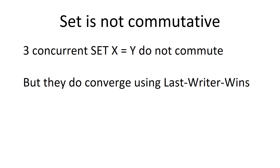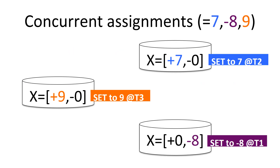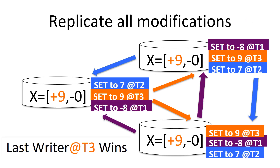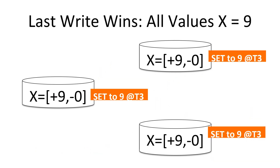Here's a convergent set example using last writer wins in the same format. There's a +7, then a minus 8 in the minus counter, and then a +9 at T3. T3 is the last writer, so everyone converges to +9.